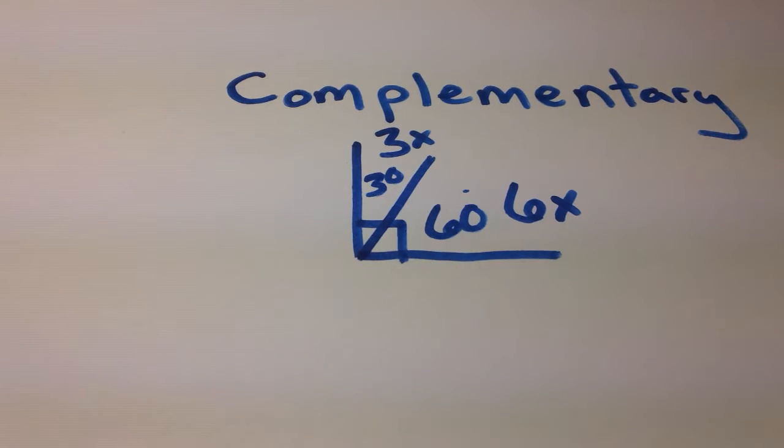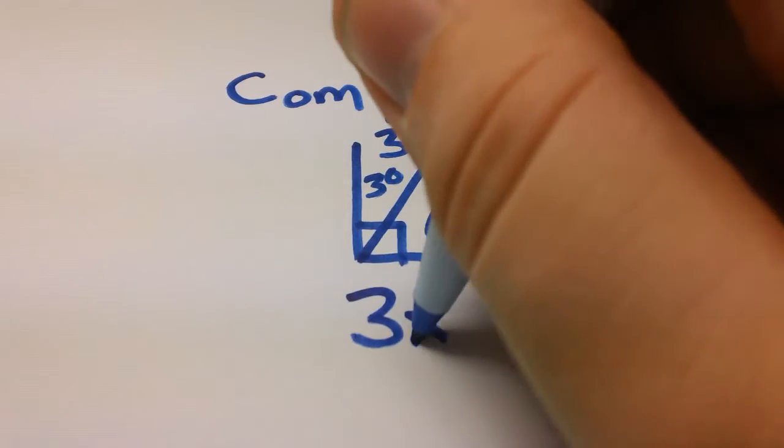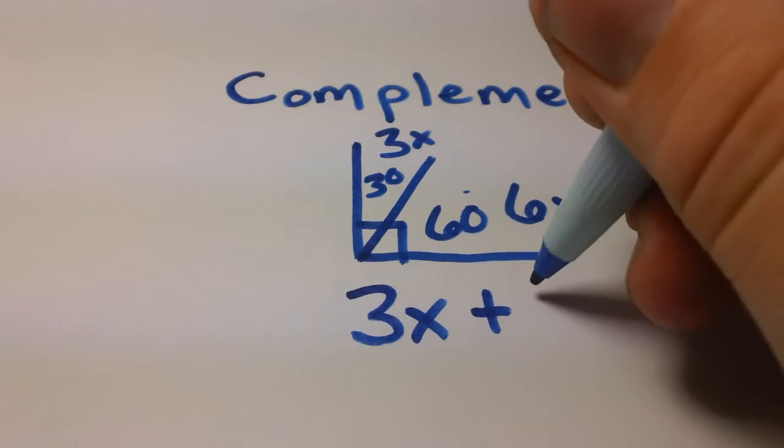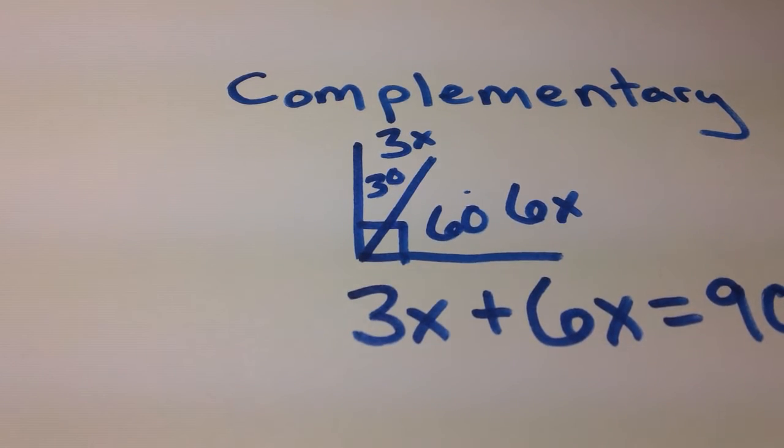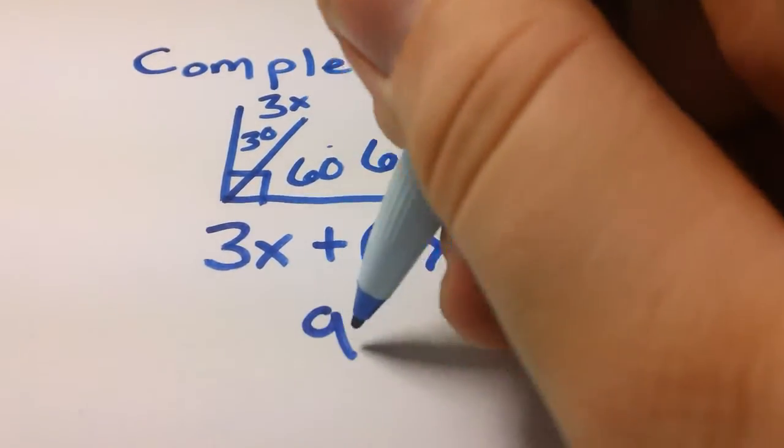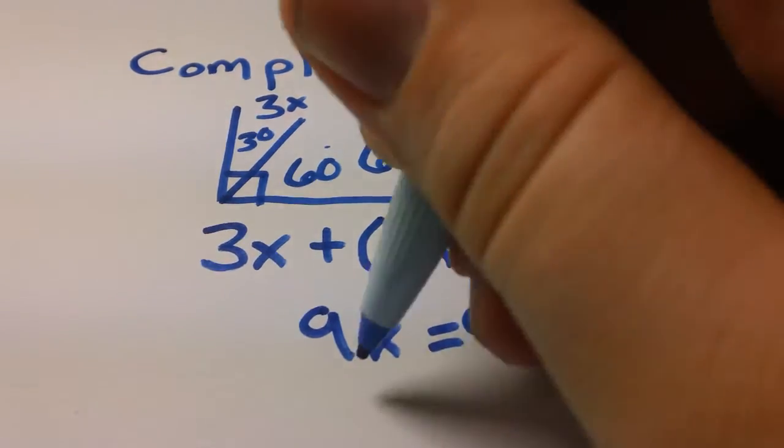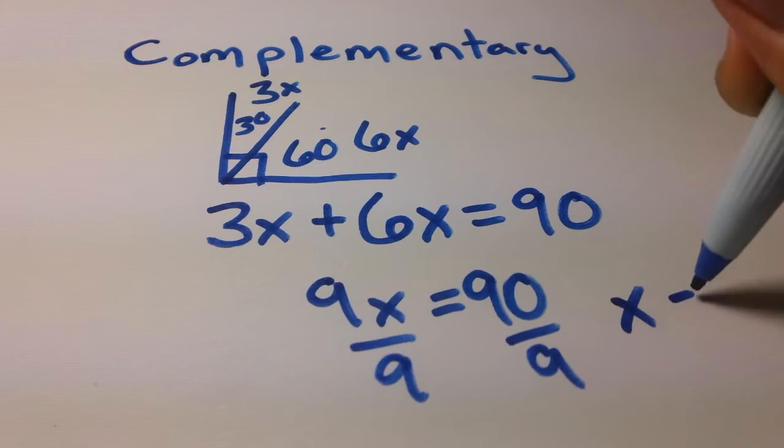So it seems to me whenever we talk about combining we're going to be doing an addition problem. So 3x added to our other complementary angle 6x equals 90 degrees. Now combining our like terms we are going to end up with 9x equals 90. Divide by that 9 and then we get x equals 10.